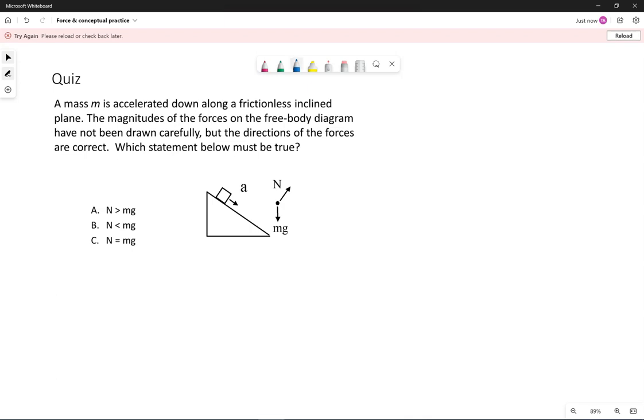This one, they've already drawn the free body diagram for us, which is nice. We have the normal force—they've labeled it as capital N instead of lowercase n, that's fine. It still represents the surface pushing on the block.